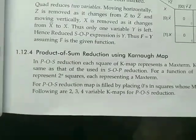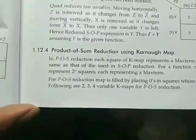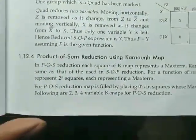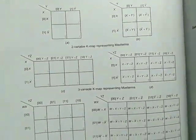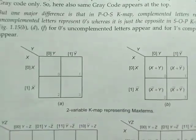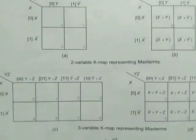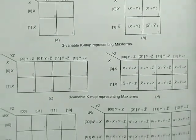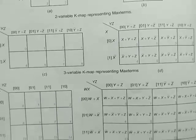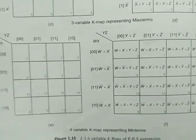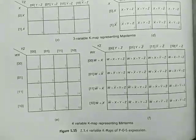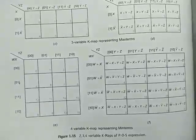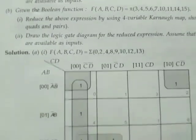The next topic is product of sum — or POS — reduction using K-map. We will see the K-map for POS: first for two inputs, then for three inputs, and then for four inputs. Please observe the numbering of each of the boxes. To understand POS better, we will work through an example.